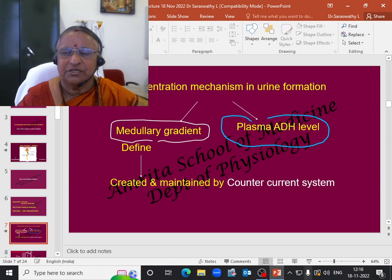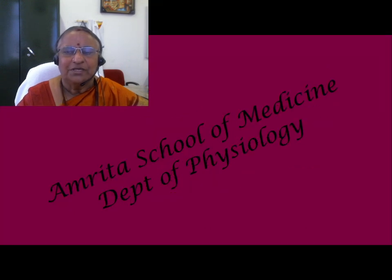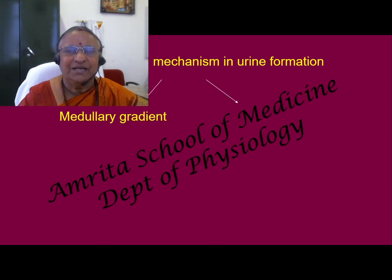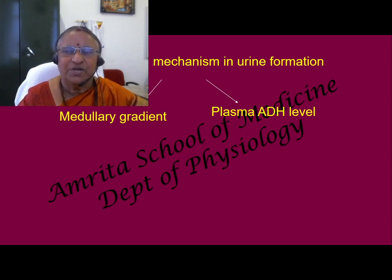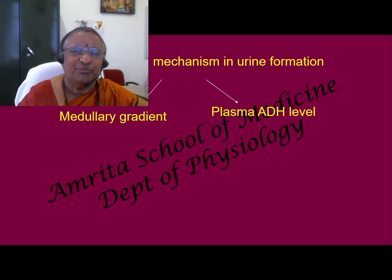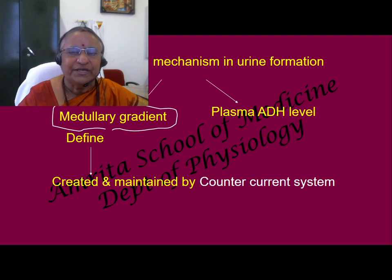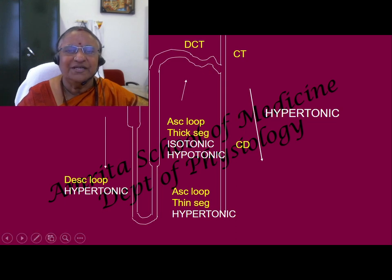Now coming to the concentration mechanism proper, it has got two components: the medullary gradient and plasma ADH level. So concentration is maintained by two mechanisms — one is based on plasma ADH level, which we will see later on, and the second is based on medullary gradient. Now what is this medullary gradient? It is a gradient of increasing osmolarity from the corticomedullary junction towards the bend of the loop of Henle.